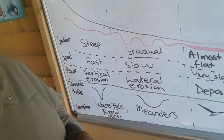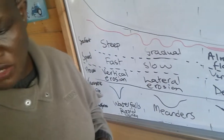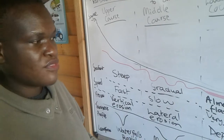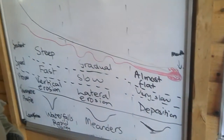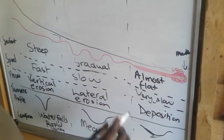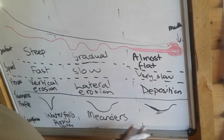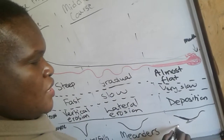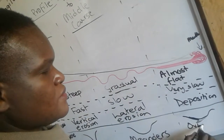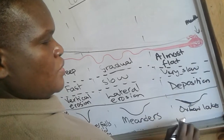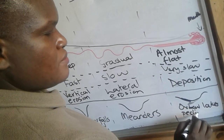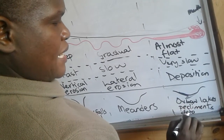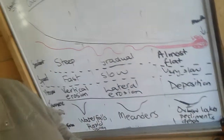Meanders start to form within the middle course of the river. As you go towards the mouth, because it is very flat and there is more deposition of material, meanders are more pronounced. Because of deposition we can also get oxbow lakes, pediments, and deltas as we approach the mouth of the river.